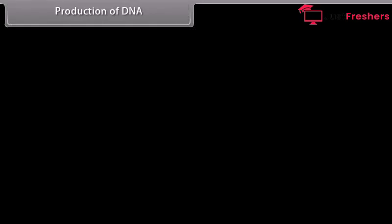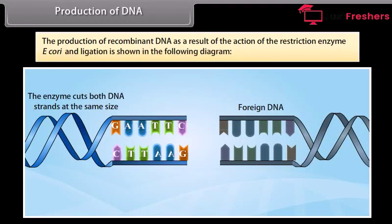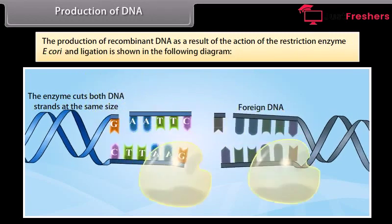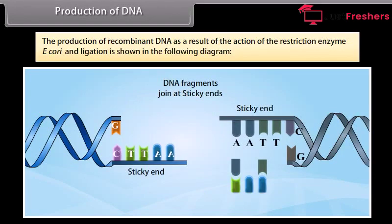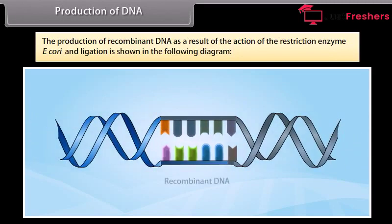Production of recombinant DNA. The production of recombinant DNA as a result of the action of the restriction enzyme EcoRI and ligation is shown in the following diagram. The enzymes cut both DNA at the same site. After that, both DNA fragments can be joined at the sticky ends, resulting in a recombinant DNA.